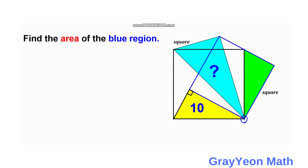First, we focus on the yellow triangle. This yellow triangle has a hypotenuse which is the side of the square — let us label this side as s. We label the legs of this yellow triangle as a for the shorter leg and b for the longer leg. Given that the area of the yellow triangle is equal to 10, area equals one-half times base times height, so area equals one-half ab. Cross-multiplying gives ab equals 20.